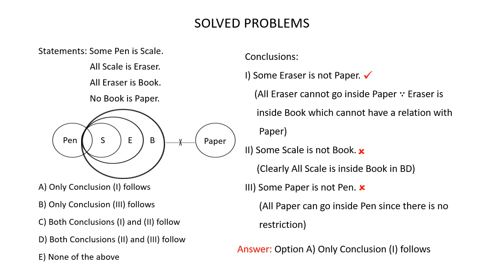Conclusion 2: Some scale is not book. Check if all scale can go inside book. Clearly you can see that all scale is inside book. So since all scale is inside book, the conclusion some scale is not book is wrong. All scale is inside book means all scales are books. If all scales are books, you cannot say some scale is not book. Conclusion 2 does not follow.